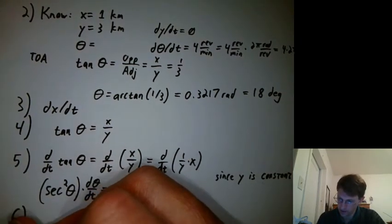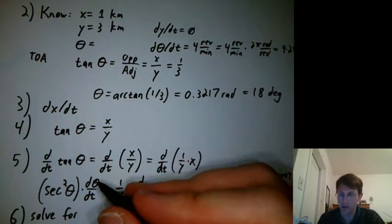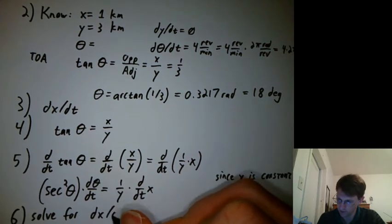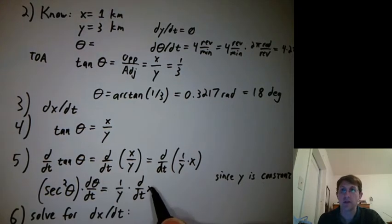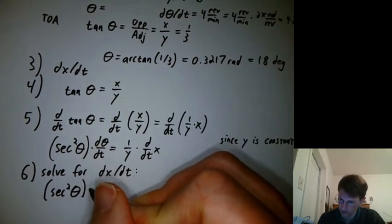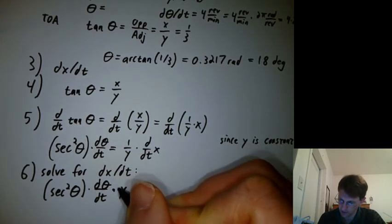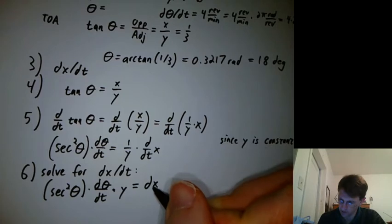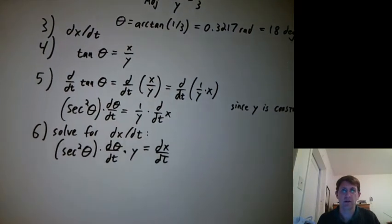So then step 6, solve for what we want. What do we want? dx/dt. So how do I solve all this for dx/dt? I've basically got dx/dt there, and I just need to multiply both sides by y. So I get secant squared theta d(theta)/dt times y equals dx/dt. And then we have to think, how are we actually going to do that?